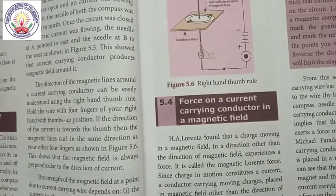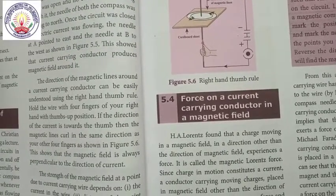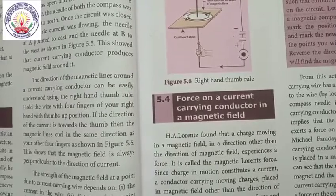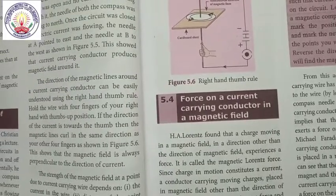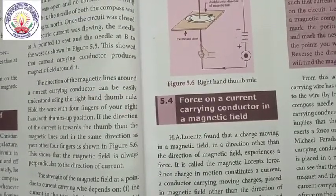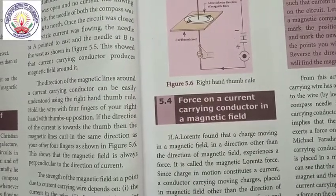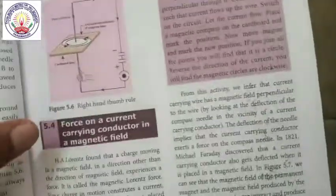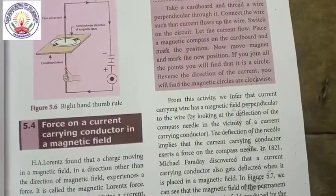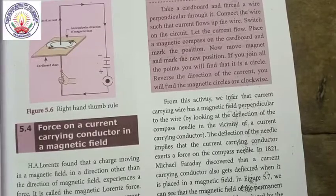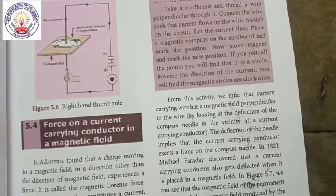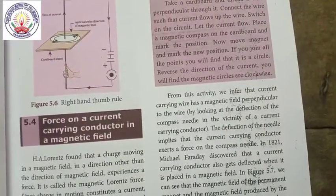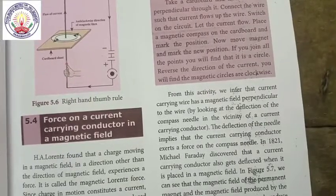Since charges in motion constitute a current, a conductor carrying moving charges placed in a magnetic field — other than along the direction of the magnetic field — will also experience a force and can produce motion in the conductor. From this activity, we infer that the current-carrying wire has a magnetic field perpendicular to the wire. The deflection of the needle implies that the current-carrying conductor exerts a force on the compass needle.